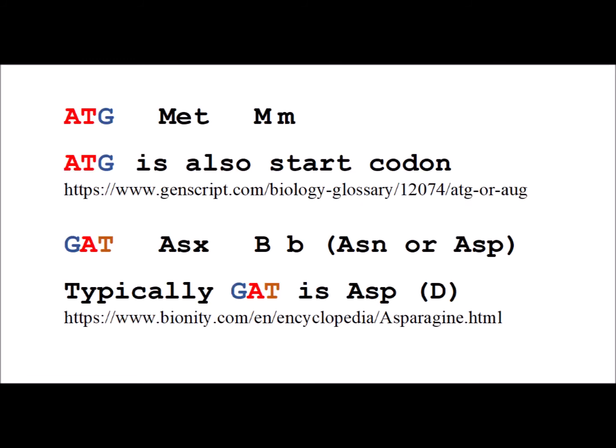For the remainder of this video, we're going to explain in a little more detail some of the variations from the standard code. So, the codon ATG, which codes for methionine, can also be a start codon to tell that the translation and transcription of the protein is supposed to begin at that particular point.